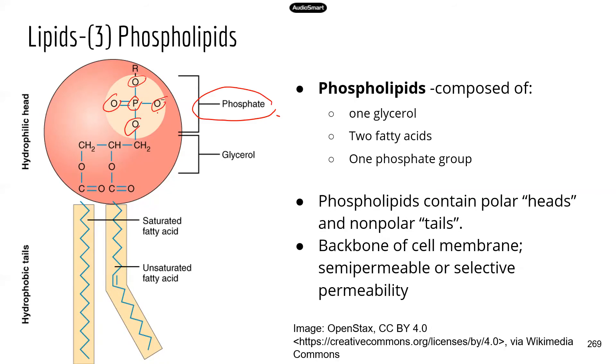Now, phosphate is negatively charged. You can see this negative charge here on one of the oxygen. This glycerol group, and then two fatty acid chains. Different than triglycerides, phospholipids only have two fatty acid chains in the structures.